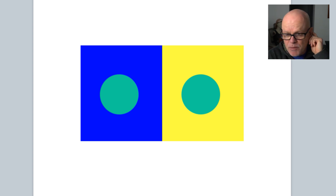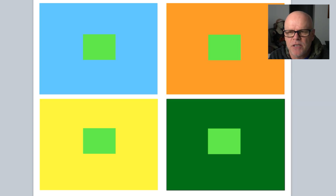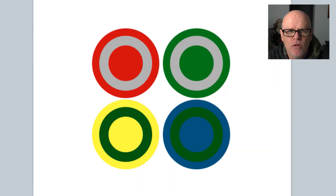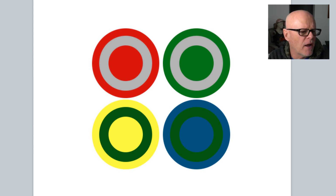The same applies with the green dot — the green dots look different but they're both the same. As we scroll down you'll see the same thing: it's the same green dot in the middle, just the surroundings have been changed, which makes the colour look completely different. That's why you've got to be very careful about how you view the colours you're trying to match. The top one with the greys and the bottom one with the greens look different because they're on different colour backgrounds.